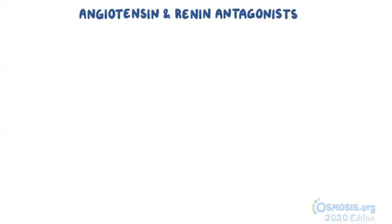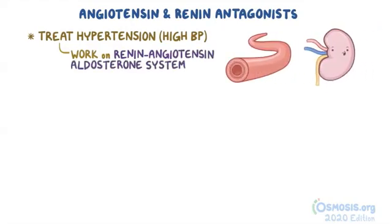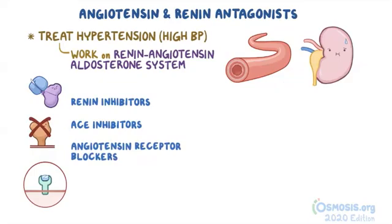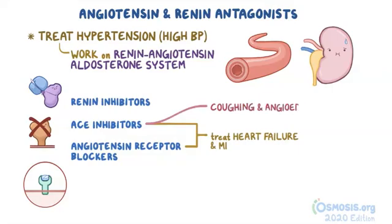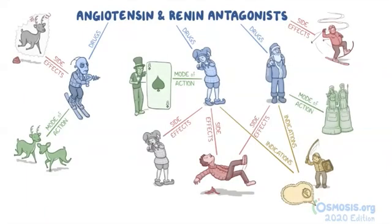As a quick recap: angiotensin and renin antagonists are a class of medications used to treat hypertension or high blood pressure. They work at different levels of the renin-angiotensin-aldosterone system that normally regulates blood pressure. The three main classes include renin inhibitors, ACE inhibitors, and angiotensin receptor blockers. ACE inhibitors and ARBs can be used to treat heart failure and MI, but ACE inhibitors cause coughing and angioedema. None of these medications should be given during pregnancy. Here's a mind map with all the mnemonics from the video — pause to test yourself and stay tuned for the answers.